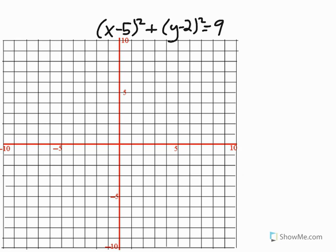So now we're going to go ahead and graph this one. Our center point would be at 5 comma 2, because h is 5 and k is 2. And the radius is 3, because the square root of 9 is 3.